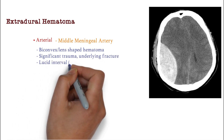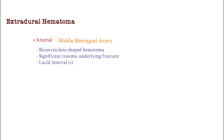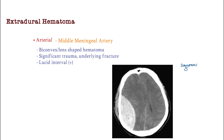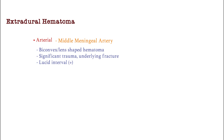Between periods of unconsciousness, Sara was conscious for a temporary period — this is called the lucid interval. It is important to note that the lucid interval is a dangerous phase because it can give a false sense of reassurance to both the injured person and healthcare providers. The individual may feel fine and not seek medical attention. The lucid interval is often associated with epidural hematomas, which occur when bleeding accumulates between the skull and the outermost layer of the brain called the dura mater. Initially, the bleeding may not cause immediate symptoms, but as the hematoma expands, it puts pressure on the brain and can lead to a rapid decline in neurological function.